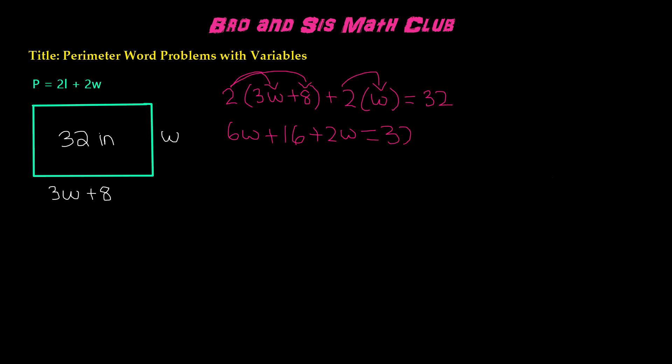Now if we combine like terms, we see that we have a 6w and a 2w, which gives us 8w plus 16, equals 32.